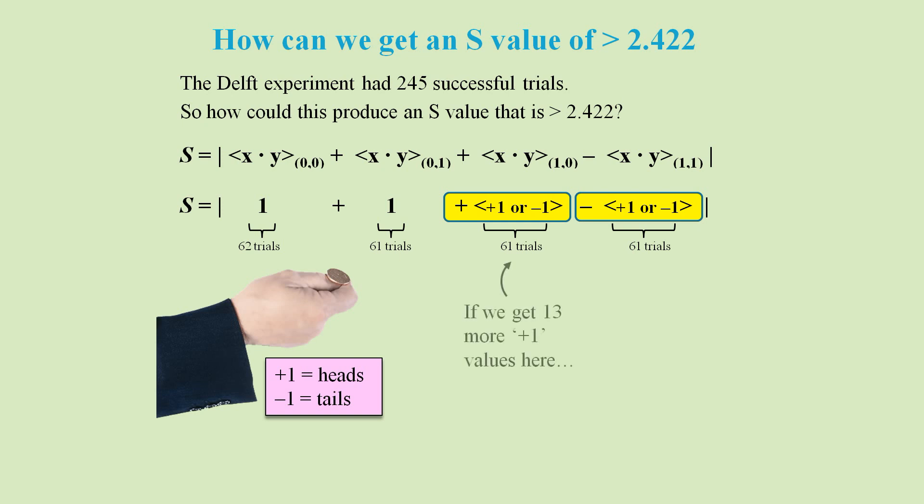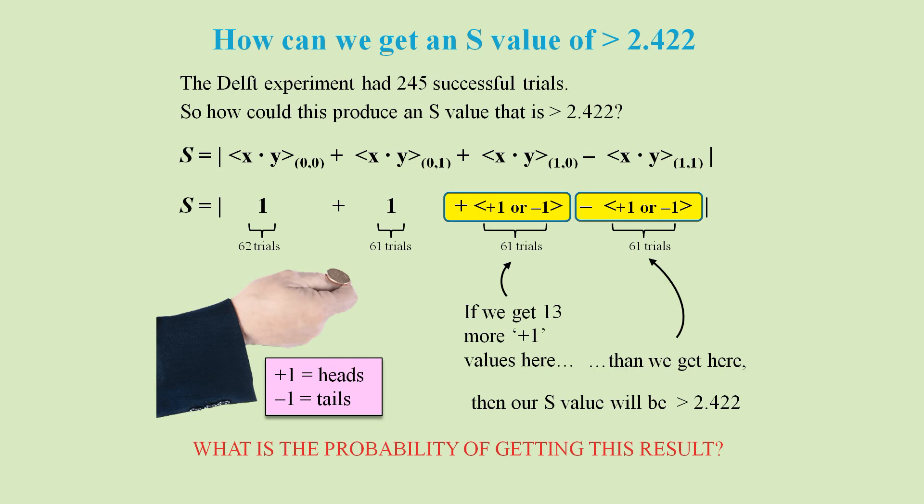And remember that the contributions to the last two terms are effectively coin flips. Then if we get 13 or more plus values here than we get here, then our S value will be greater than they got at Delft. So what is the probability of getting this result by pure chance?